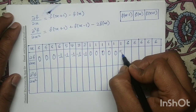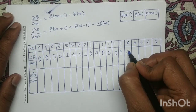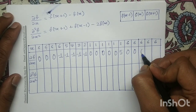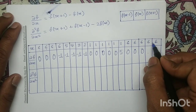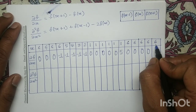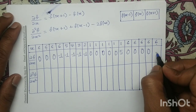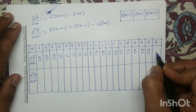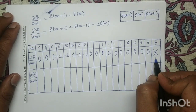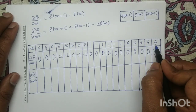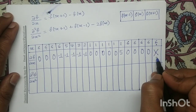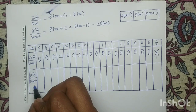At this position, 6 minus 1 = 5. Then 6 minus 6 = 0 at the next few positions. But at the last position, f(x) is defined but f(x+1) is not defined, so we cannot evaluate this term — we will put a cross mark here indicating it cannot be determined.